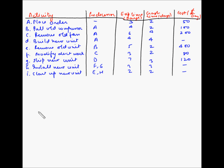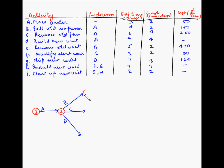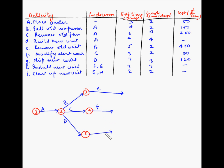First we will draw activity A because it does not have any predecessors. Next, B, C, and D are all dependent on the completion of activity A. So let us draw these three activities. This is B, C, D, and this is A. Let us draw the ending nodes 3, 4, 5. Now E is dependent on B, F is dependent on C, and G is dependent on D. So let us draw these: this is E, this is F, and this is G.